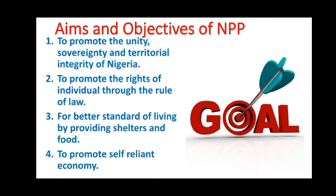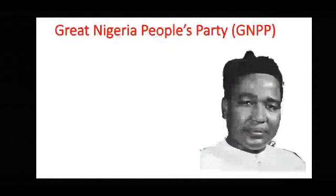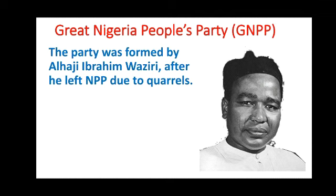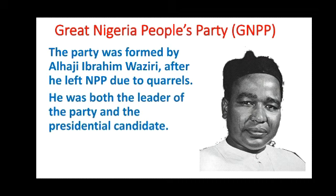Now let's look at the Great Nigerian People's Party — the GNPP. Alhaji Ibrahim Waziri, as you can see in the picture, was the founder of the Great Nigerian People's Party, after he had quarrelled with members of the NPP. He left the NPP, formed the GNPP, and became the party leader as well as the presidential candidate.